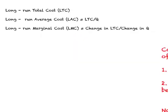Now let us look at long-run phenomena for a firm under perfect competition. In the long run, all inputs are variable, so all costs are variable costs. From long-run total cost (LTC) we can figure out long-run average cost, which is LTC divided by quantity Q, abbreviated as LAC. We also have long-run marginal cost (LMC), which is the change in LTC divided by the change in total output.